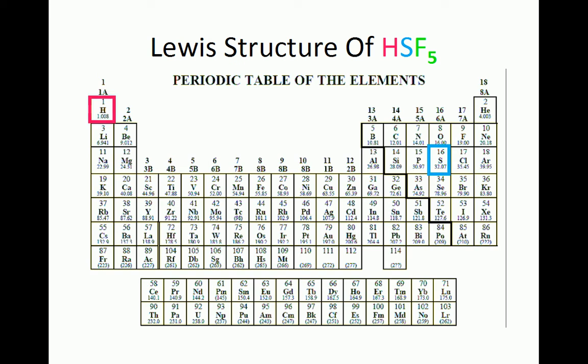We find Hydrogen, Sulfur, and Fluorine in the periodic table, determine the number of valence electrons in each, and see that HSF5 has 42 electrons.